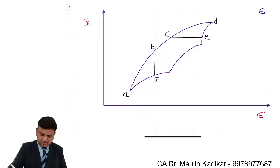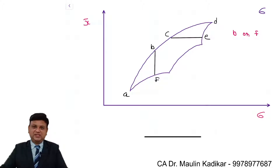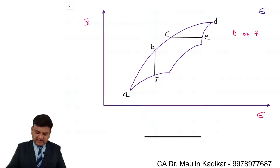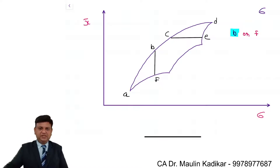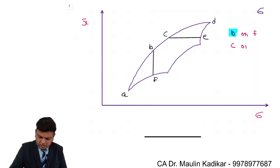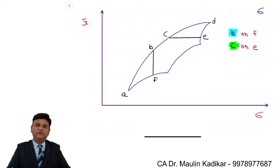My question is: as an investor, would you like to make investment in portfolio B or portfolio F? We understand that as an investor I would like to make investment in B instead of F, because for the same risk B is able to give more return. My next question is: portfolio C or portfolio E? We understand that as an investor I would prefer C instead of E, because C gives the same return with lower standard deviation.